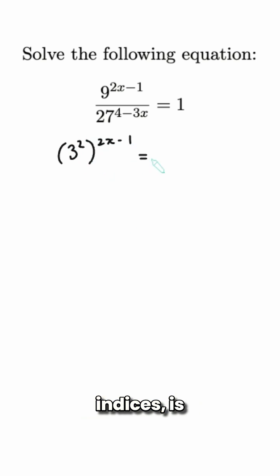Which using the rules of indices is 3 to the 2 times 2x minus 1, or 3 to the 4x minus 2.